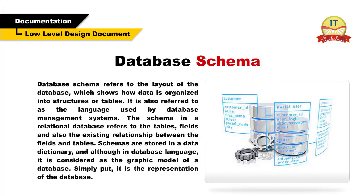Database Schema refers to the layout of the database, which shows how data is organized into structures or tables. It is also referred to as the language used by database management systems. The schema in a relational database refers to the tables, fields, and the existing relationship between the fields and tables. Schemas are stored in a data dictionary and are considered the graphic model of a database — simply put, it is the representation of the database. An example of a database schema is the number of characters in a string for a field name or password, including the kind of characters allowed, and the relationship between tables within a certain database.